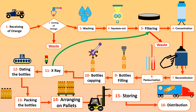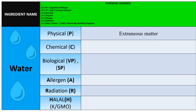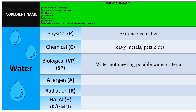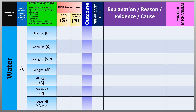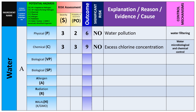Moving to the second raw material — water — we must make a risk assessment for each ingredient. Water physical hazards come from extraneous matter; chemical hazards include heavy metals or pesticide residues; biological hazards arise from water not meeting potable water criteria. Allergen is not applicable, radiation is very rare, and halal is not applicable. Water is stored at ambient temperature. Physical hazard outcome is not significant; the cause is water pollution, and controls include water quality monitoring, sorting, approved supplier, and filtration.